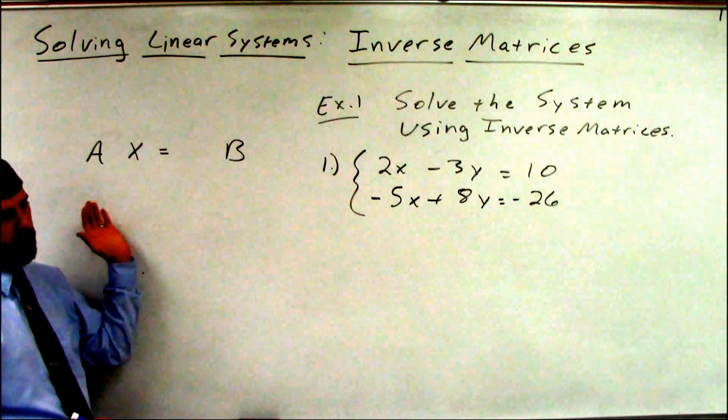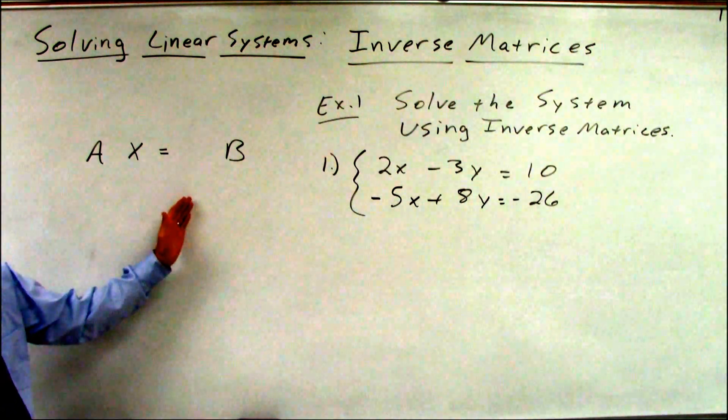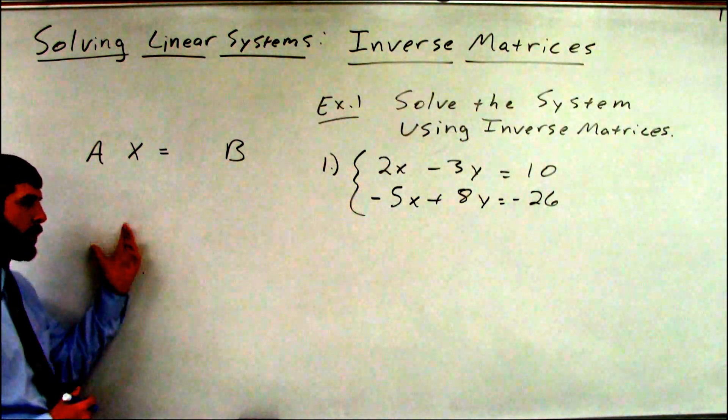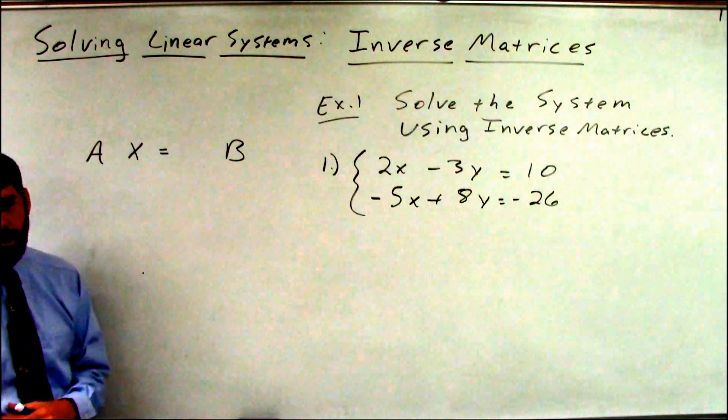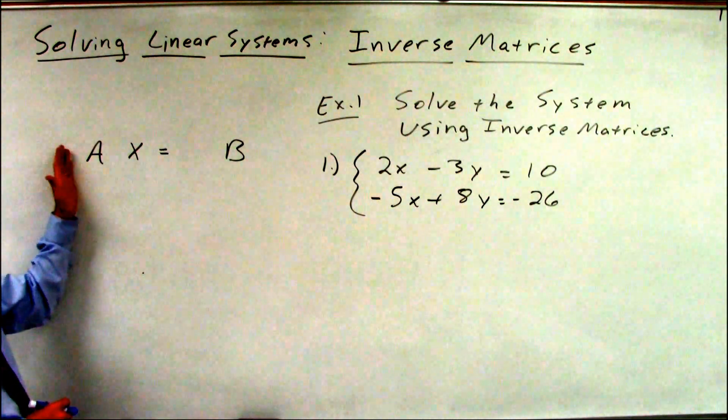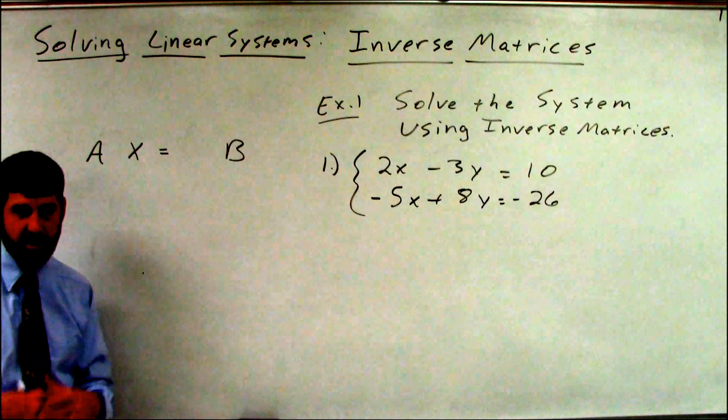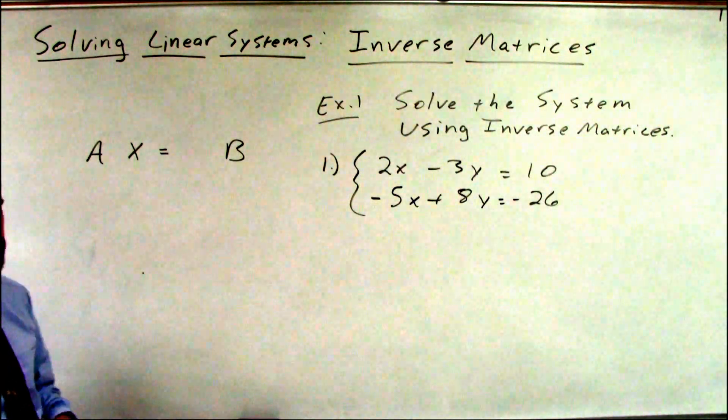So it's the same thing as if I had 2X equals 10. If I divided both sides by 2 or multiplied both sides by half, I would get that 1X. Same idea here. I need to multiply by what's going to turn this A into the identity matrix. The matrix equivalent of a coefficient of 1.